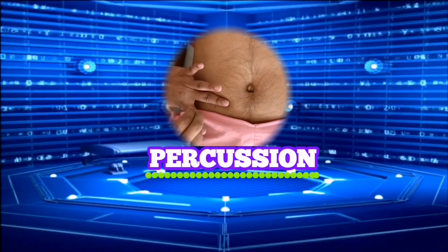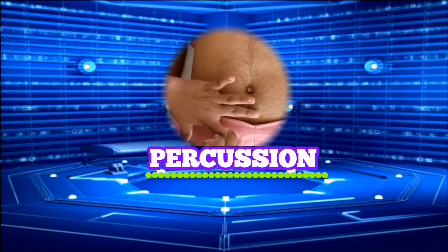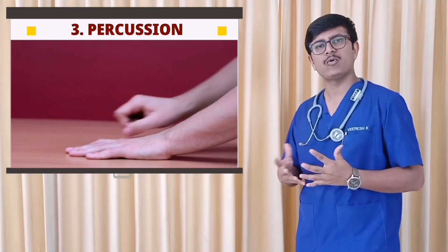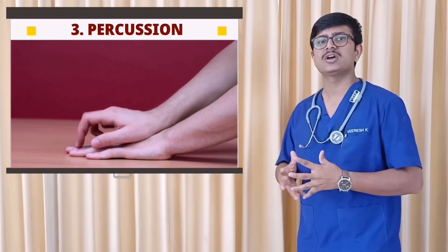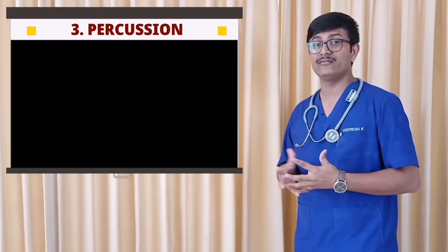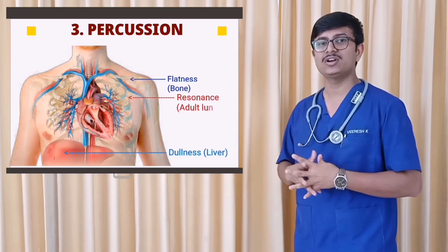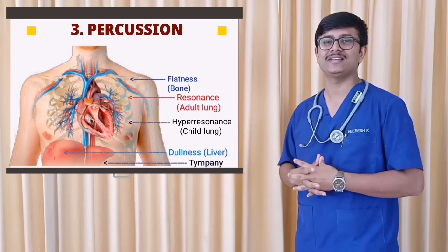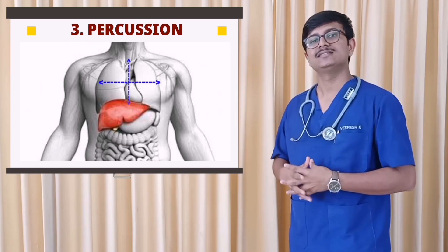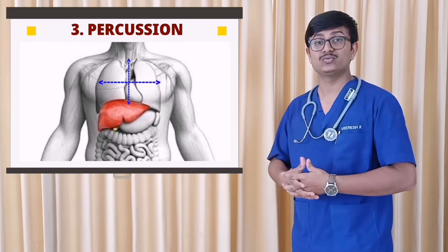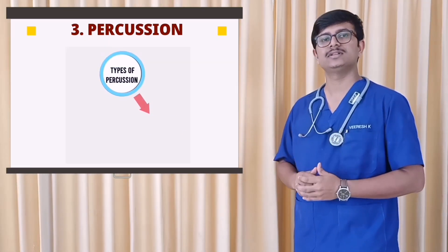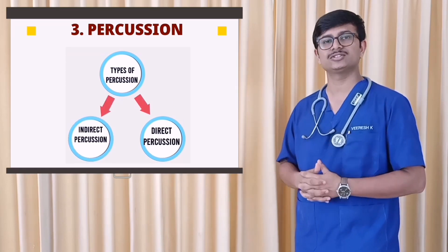Percussion is a technique of tapping fingers on a portion of the body, which produces sounds that aid in diagnosing the condition of underlying tissues. The sounds may include flatness, dullness, resonance, hyper-resonance, or tympany. It is used to determine the position, size, and shape of internal organs, as well as to detect fluid-filled organs. Percussion consists of two types: direct percussion and indirect percussion.